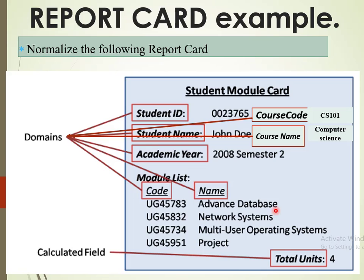When you are presented with such a form — in this particular case, a student module card — how do you translate it into UNF? Step one: we need to identify what we refer to as the domains. The domains are the ones you can see here, and they are the ones that later become our fields. The domains help us populate the data — the student ID, the student name, and the academic year each capture specific information.